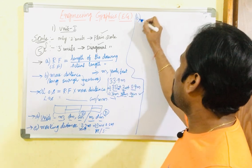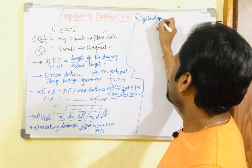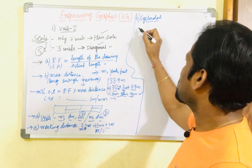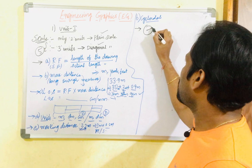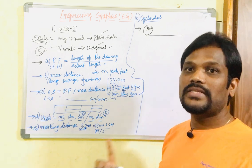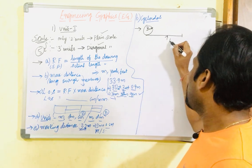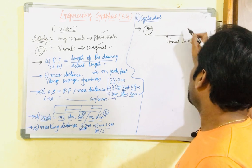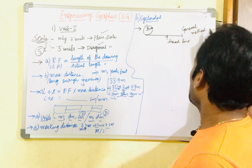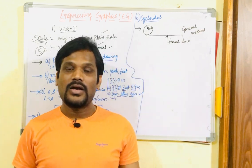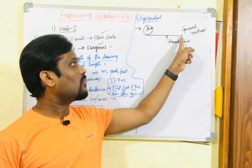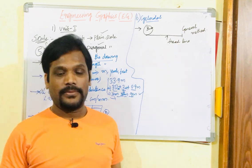Next is cycloidal curves. If a cycloid question is asked, the diameter or radius of a circle will be given, and it rolls on a flat surface. If the circle moves on a fixed straight line or flat surface, it is the general cycloid method. A typical question: 'A circle of diameter 40 or 50 rolls on a fixed straight line for one complete revolution without slipping.'